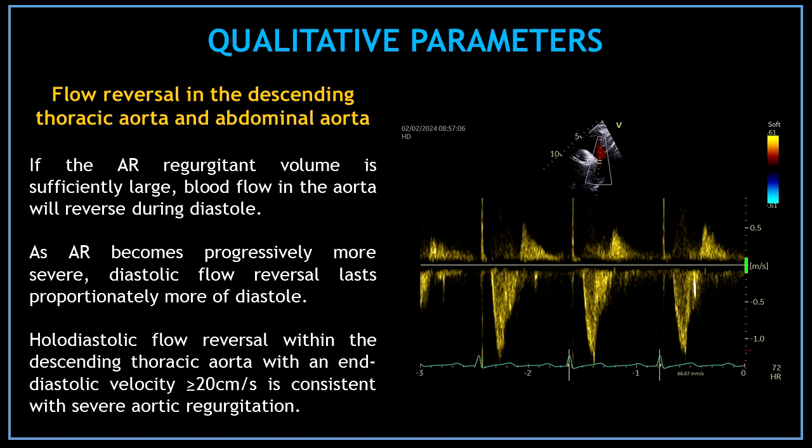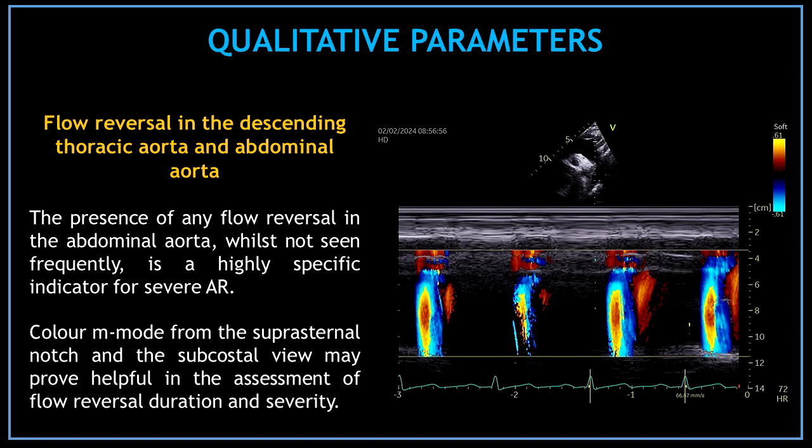The next qualitative parameter for the assessment of aortic regurgitation is the flow reversal in the descending thoracic aorta and abdominal aorta. If the aortic regurgitation regurgitant volume is sufficiently large, blood flow in the aorta will reverse during diastole. As aortic regurgitation becomes progressively more severe, diastolic flow reversal lasts proportionally more of diastole. Holodiastolic flow reversal within the descending thoracic aorta with an end diastolic velocity greater than or equal to 20 cm/s is consistent with severe aortic regurgitation. The presence of any flow reversal in the abdominal aorta, whilst not seen frequently, is a highly specific indicator for severe aortic regurgitation.